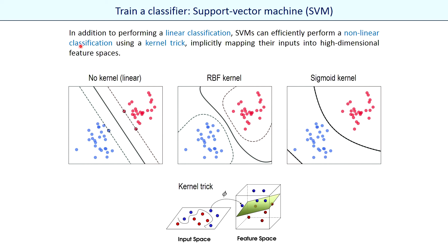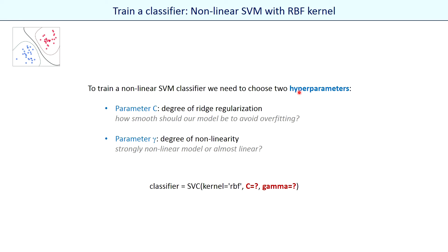The SVM method can perform non-linear classification using a kernel trick, a modified version of the method. A kernel allows us to bend the boundary so it can take different forms. With an RBF kernel — radial basis function — we can achieve more rounded shapes of the boundary. To train the SVM classifier with RBF kernel, we need to choose two hyperparameters: C, which controls the degree of regularization to avoid overfitting using standard ridge regularization; and gamma, which controls how strongly we bend the boundary while using the kernel.